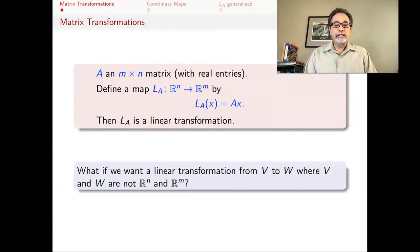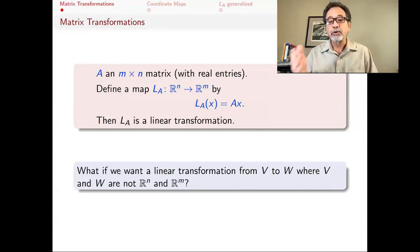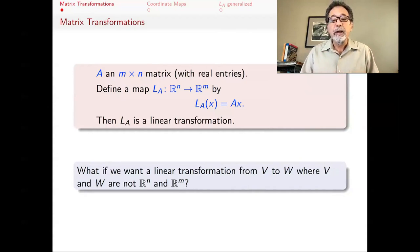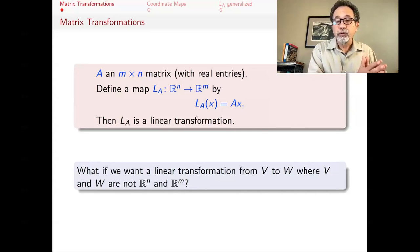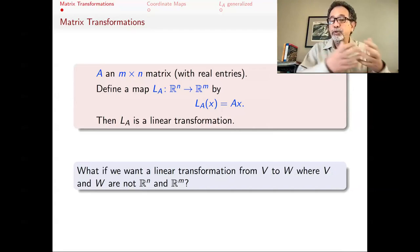What we want to do now is generalize the question and ask: what if we want a linear transformation from V to W, where V and W are not Rn and Rm? The key, which we have shown in our lectures on isomorphisms, is that every finite dimensional vector space over the reals is isomorphic to some Rn or Rm. We will use that isomorphism to translate things from V to Rn and back.